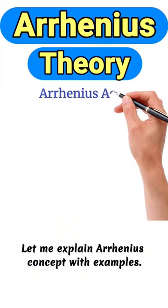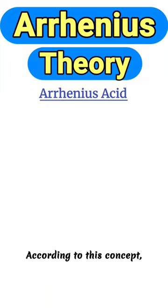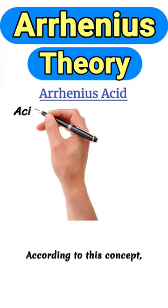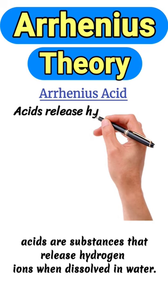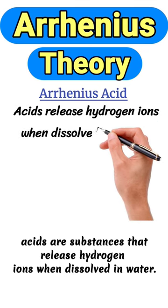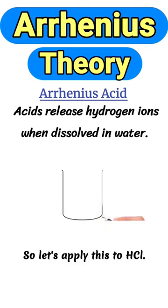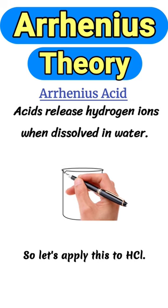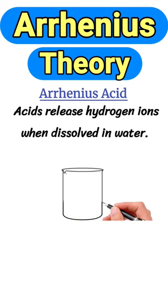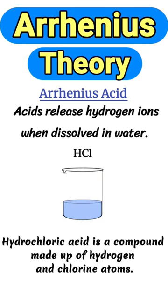Let me explain the concept with examples. According to this concept, acids are substances that release hydrogen ions when dissolved in water. So let's apply this to HCl — hydrochloric acid is a compound made up of hydrogen and chlorine atoms.